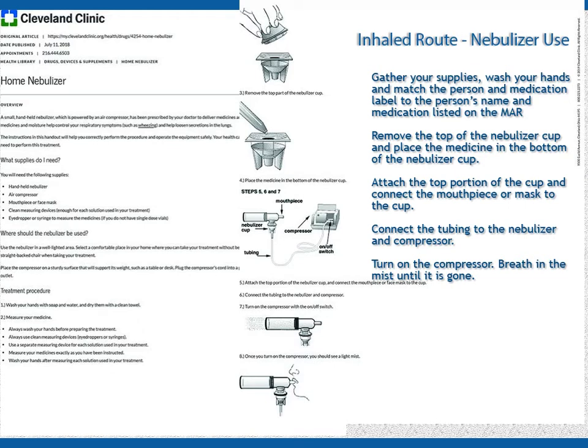The basic steps to set up and use the nebulizer are as follows. 1. Wash your hands well. 2. Connect the air hose to the nebulizer machine. 3. Fill the medicine cup with the prescribed medication by removing the top and placing the liquid into the cup. To avoid spills, close the medicine cup snugly and always hold the container straight up and down. 4. Attach the air hose and the mouthpiece or mask to the medicine cup. 5. Breathe in the mist until it is all gone — this may take 10 to 15 minutes or more. 6. Turn off the machine when the medicine is completely gone and there is no more mist being produced. 7. Wash the medicine cup and mouthpiece with water and allow to air dry until your next treatment.